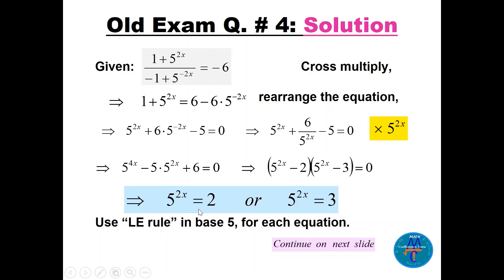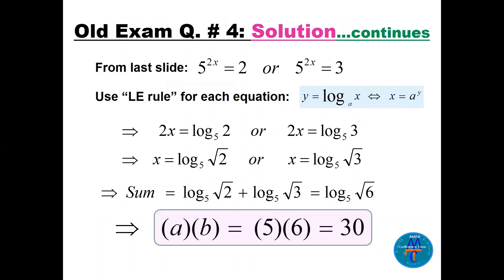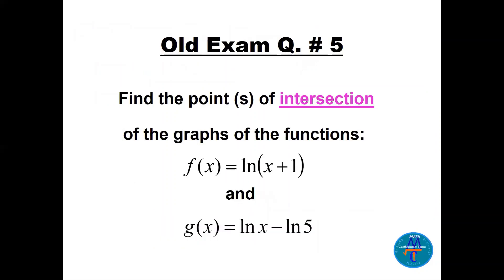Applying the logarithm rule, 2x equals log base 5 of 2 and 2x equals log base 5 of 3. Dividing by 2: x equals log base 5 of 2^(1/2) (square root of 2) and x equals log base 5 of 3^(1/2) (square root of 3). The sum uses the product law: log base 5 of (√2 · √3) equals log base 5 of √6. So a equals 5 and b equals 6, giving a times b equals 30.